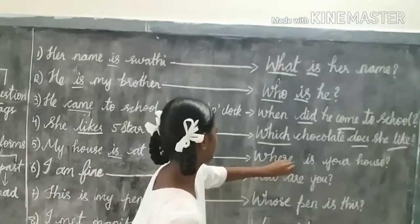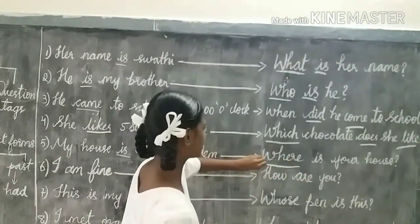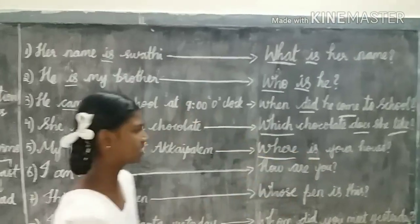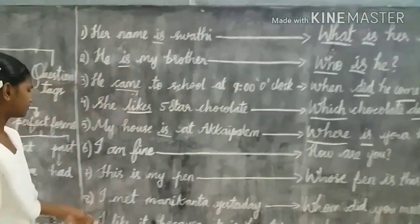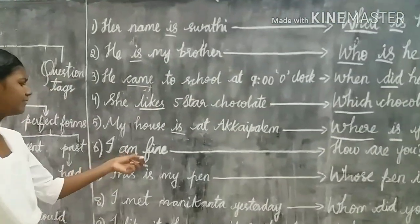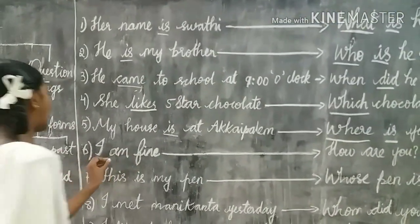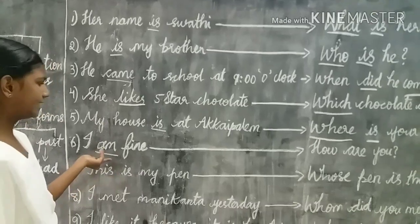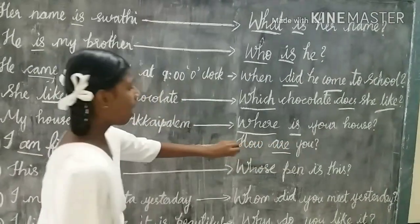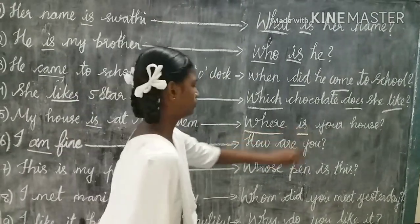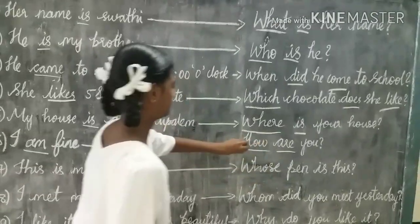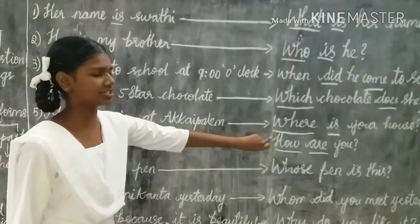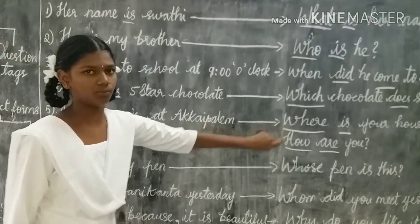The WH question used for place is 'where,' where 'is' is an auxiliary verb. For the example 'I am fine,' 'am' is an auxiliary verb indicating 'are.' We use the WH question word 'how,' giving us: How are you?